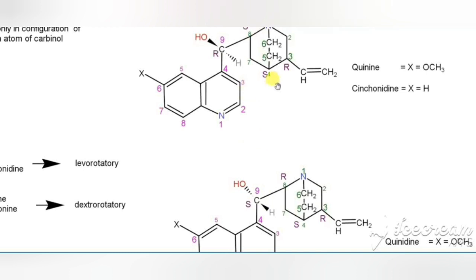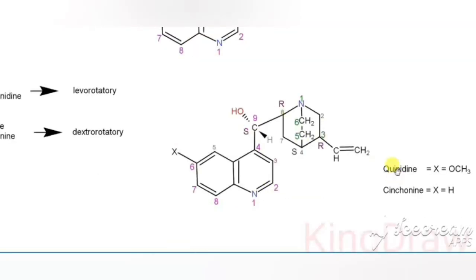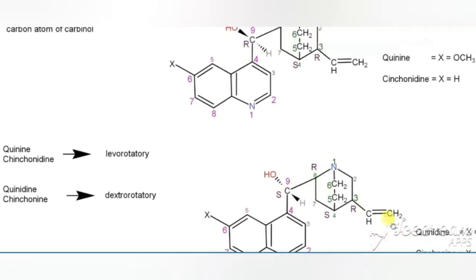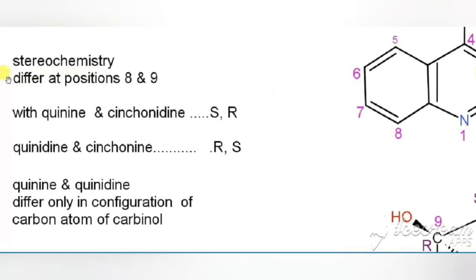The stereochemistry: for quinine and cinchonidine, the 8th and 9th positions are S and R respectively. For quinidine and cinchonine, the 8th and 9th positions are R and S respectively.